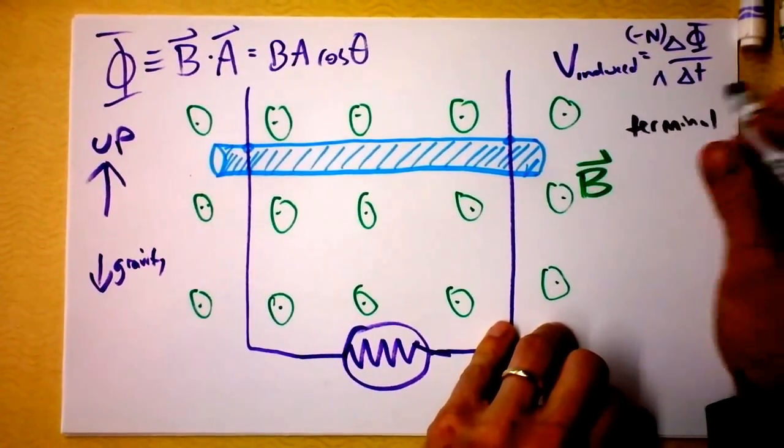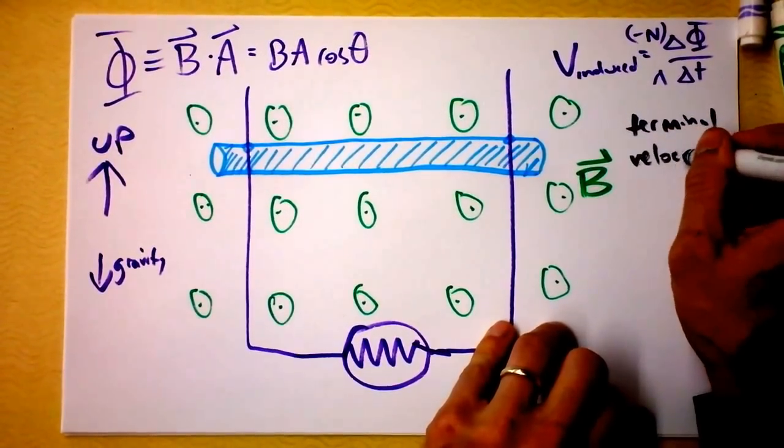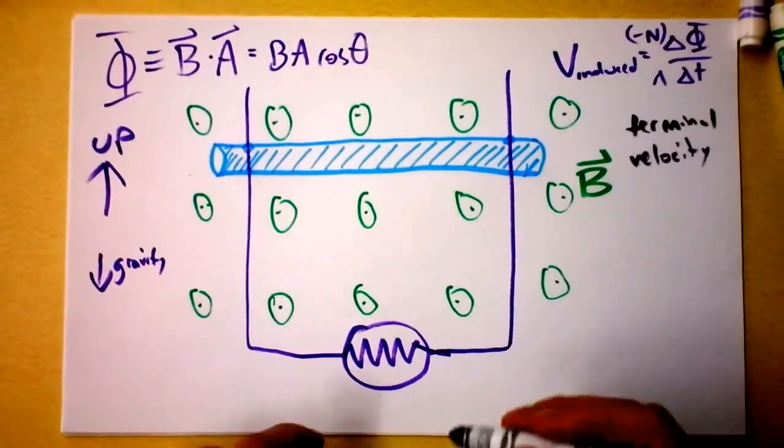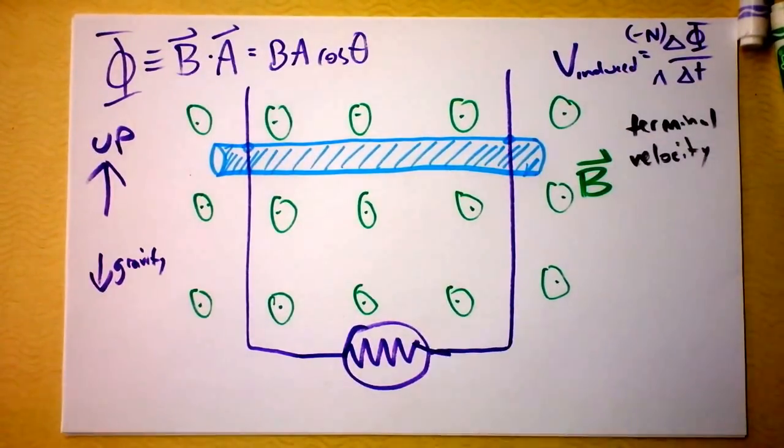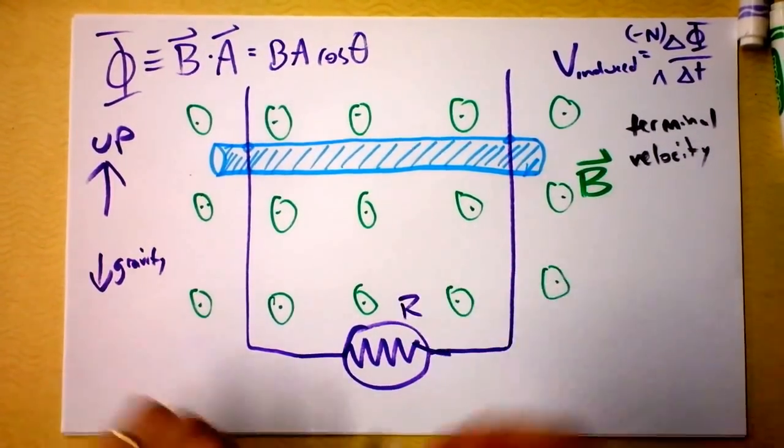We could in fact find its terminal velocity. It will probably depend on the resistance of the light bulb. Let's see if we can get ourselves an R right there.